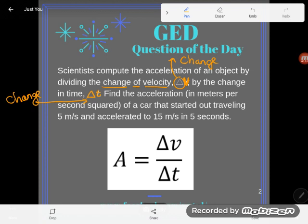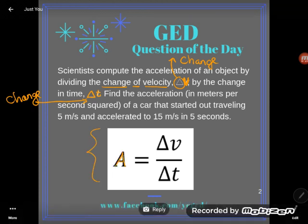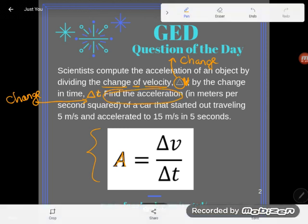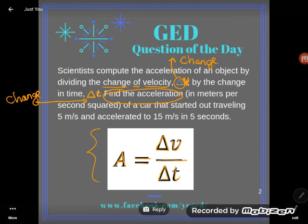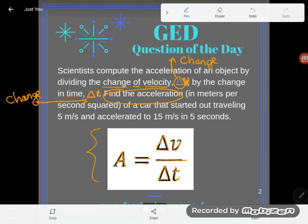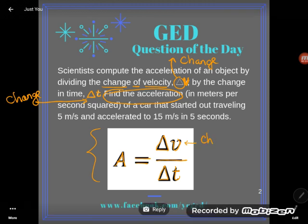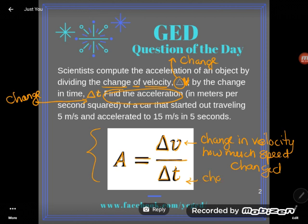A lot going on here, but I don't want you to freak out because we have a formula. The formula will tell us what to do as long as we know how to read it. This formula says if you'd like to find acceleration, and we do, that's what they told us to find, then what you should do is take the change in velocity, how much the speed of this car changed, and divide it by the change in time, how much time passed. So let's just make a note of that. Change in velocity - I'm talking about how much the speed changed. And triangle T means change in time, how much time passed.